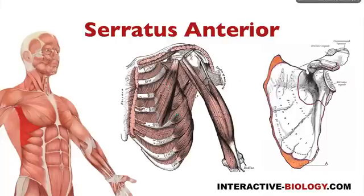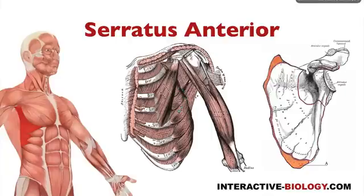It wraps around posteriorly and connects right here at the insertion point: the anterior surface of the medial border of the scapula. Here's the scapula — this is the left scapula, just like we're showing over here. Picture this muscle going all the way posteriorly and then extending all the way to the anterior surface of the medial border of the scapula.